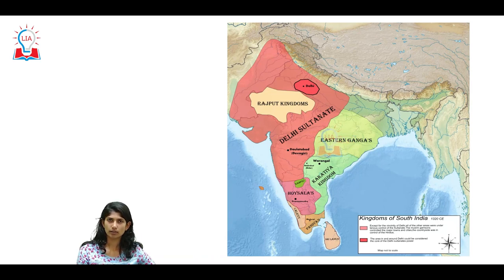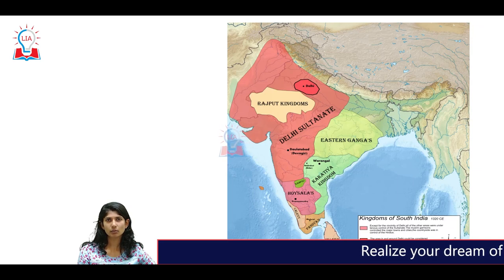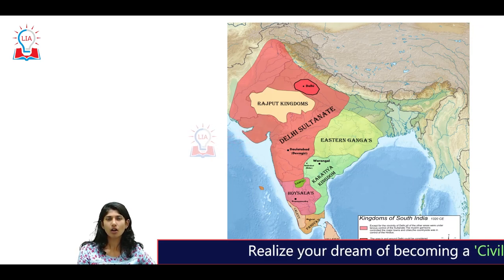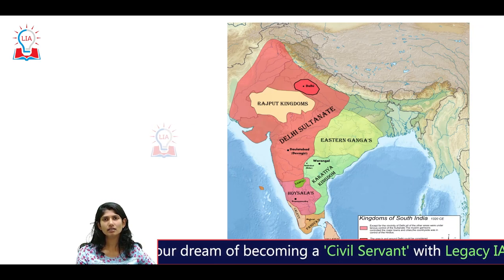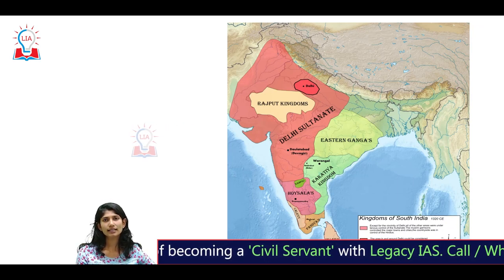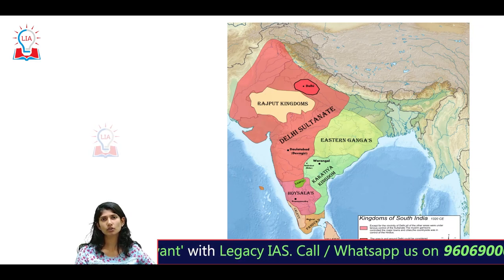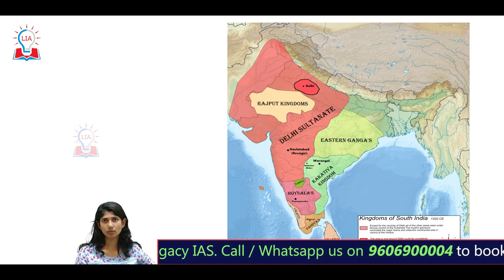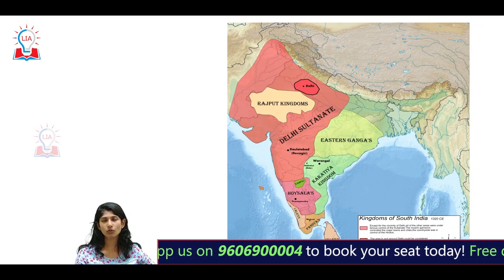For anything to be born, necessary conditions have to be created. For example, take the Magadha empire — the very first empire that India had. At that point of time the dominant religion was Hinduism or Brahmanism, but the atrocity and orthodoxy had increased so much that society itself craved for a change. Thus was born Buddhism and Jainism. The society creates the necessary conditions for the emergence of a new system or a new order.